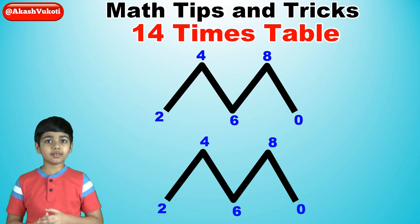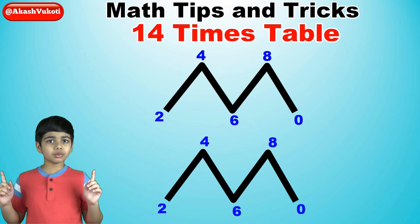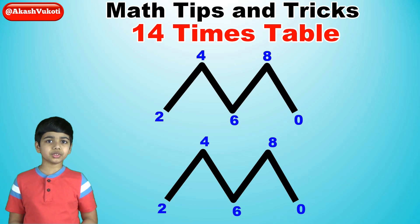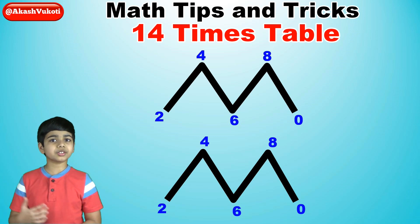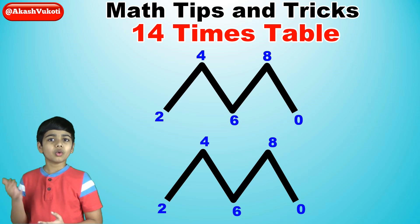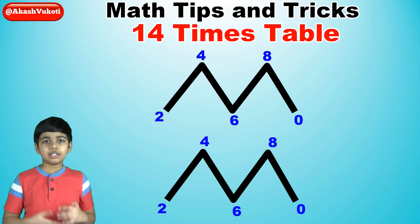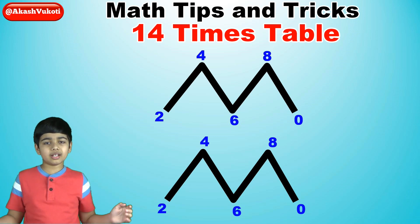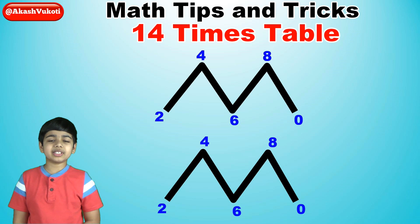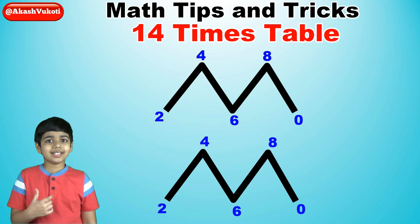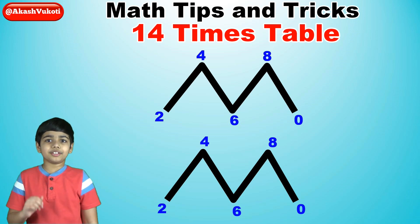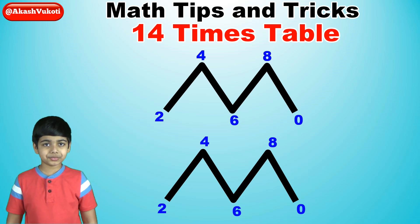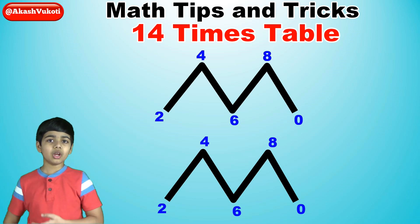Now we'll work on the tens digits. We will write the numbers from 1 to 14 horizontally throughout the M's, skipping the numbers 3, 6, 10, and 13.